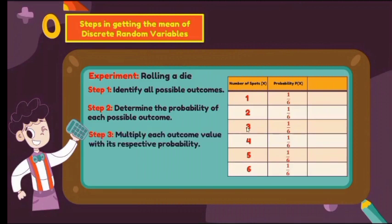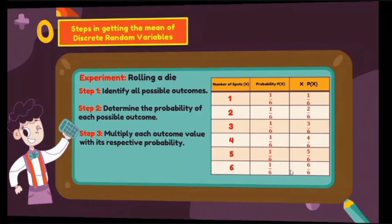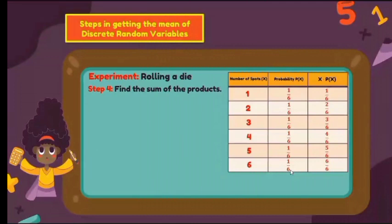Step 3: multiply each outcome value by the respective probability. You multiply the value of X by P(X). So: 1 times 1/6 equals 1/6; 2 times 1/6 equals 2/6; 3 times 1/6 equals 3/6; 4 times 1/6 equals 4/6; 5 times 1/6 equals 5/6; and 6 times 1/6 equals 6/6. Step 4: find the sum of the products. Use the formula: the summation of X times P(X).